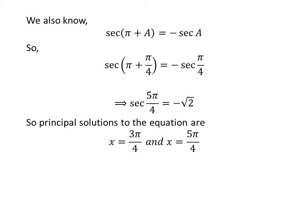So, the principal solutions to the equation secant of x is equal to minus square root of 2 are 3 times pi upon 4 and 5 times pi upon 4.